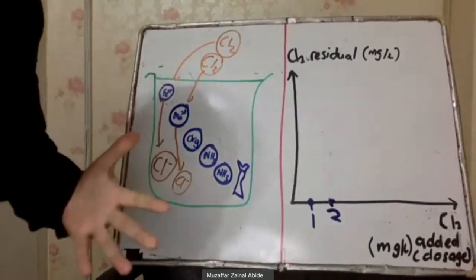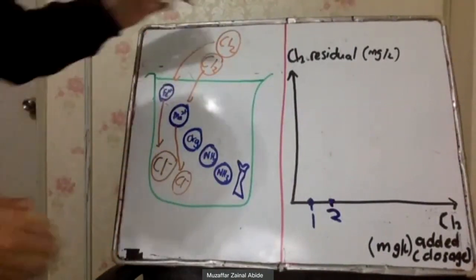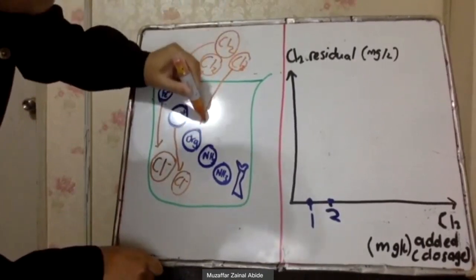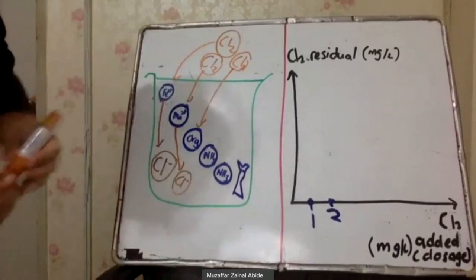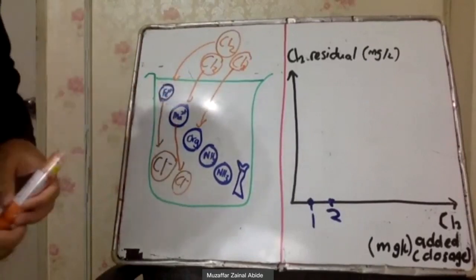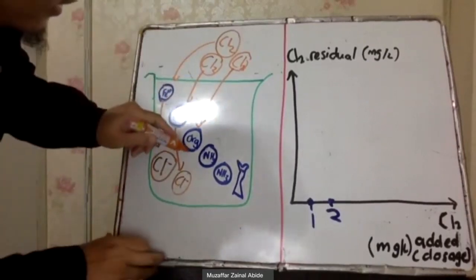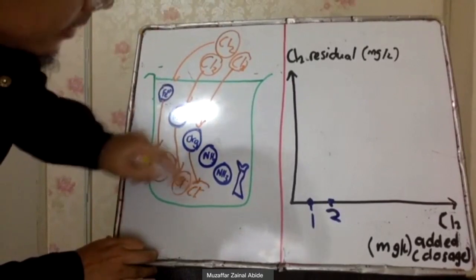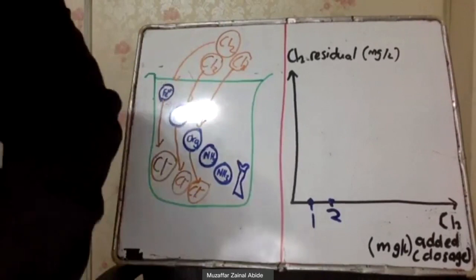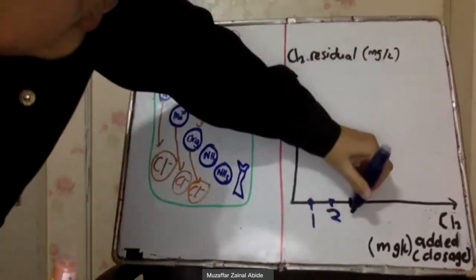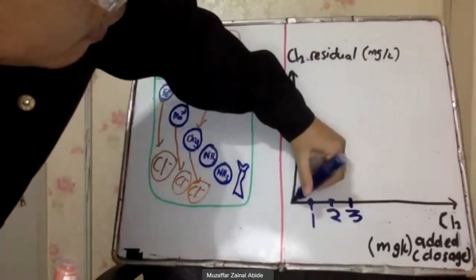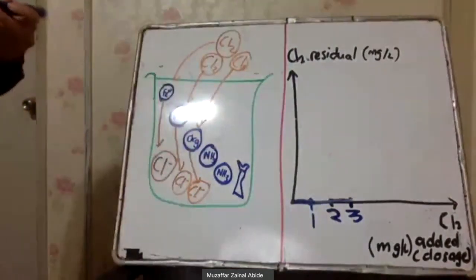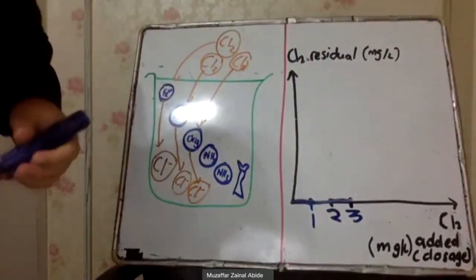Then we add the third chlorine. After reacting with iron and manganese, it reacts with organic compounds — and this also produces Cl⁻, which is not a disinfectant. So after adding the third chlorine, we still have zero chlorine residual.